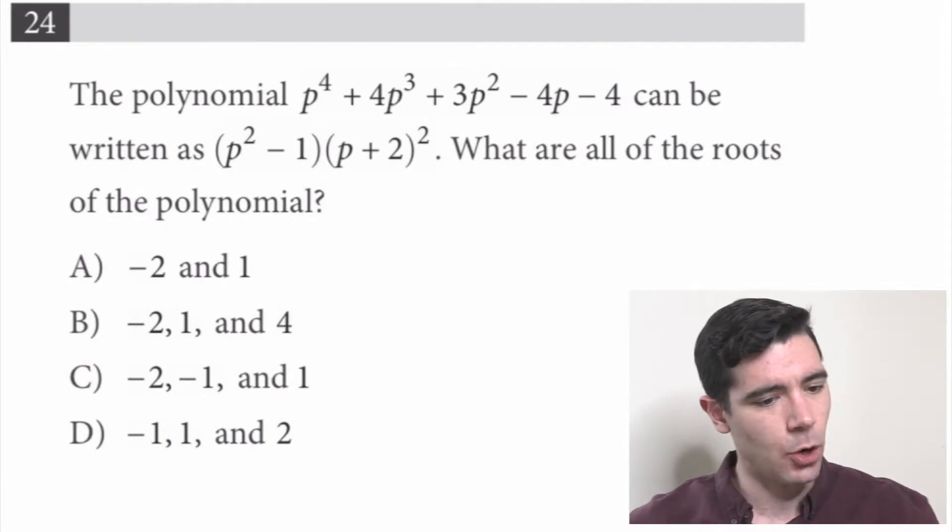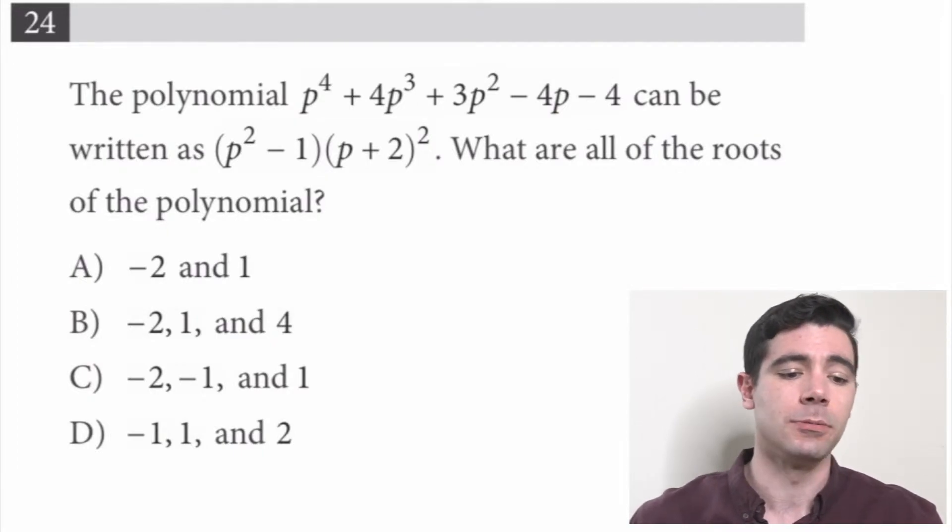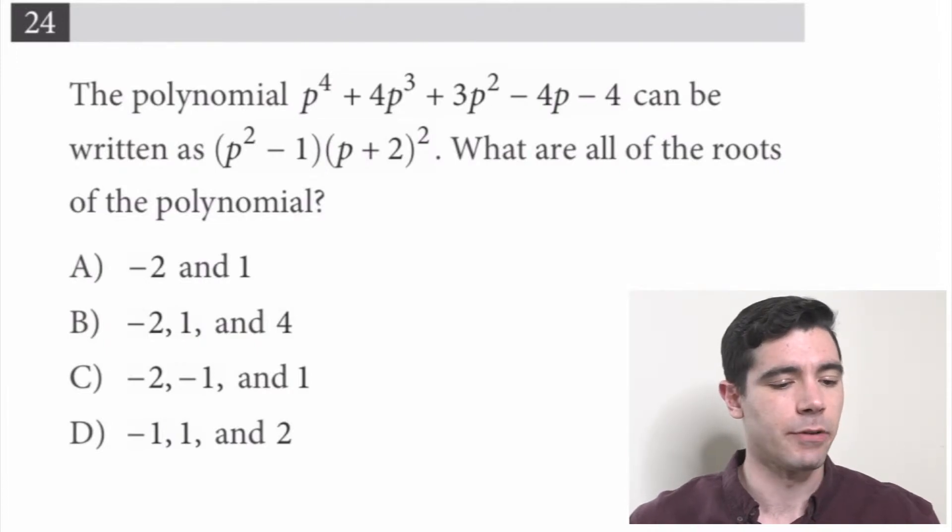It reads, the polynomial p to the 4th plus 4p cubed plus 3p squared minus 4p minus 4 can be written as quantity p squared minus 1 times quantity p plus 2 squared. What are all of the roots of the polynomial?